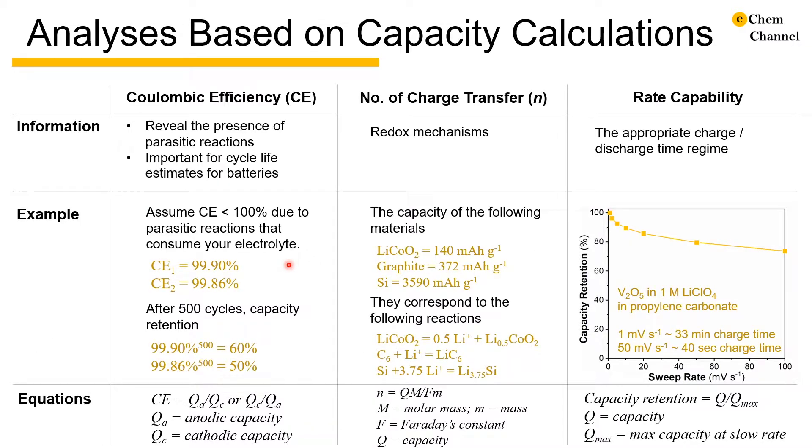Coulombic efficiency is a powerful parameter to identify parasitic reactions that contribute to the current in addition to the charge storage event. It is the ratio of the charge being stored or withdrawn to the reverse process.